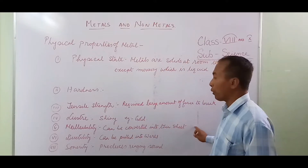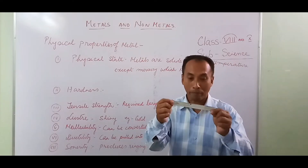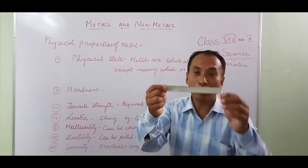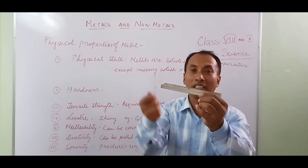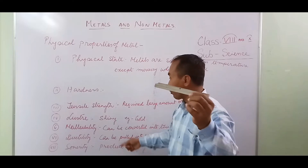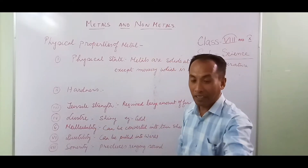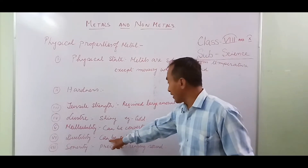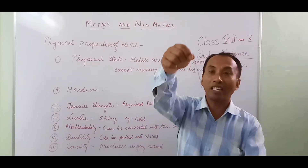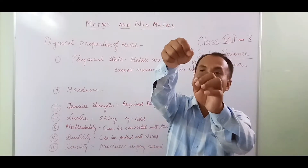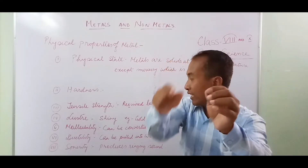The fifth property is malleability — malleability means a metal can be converted into thin sheets when beaten or hammered. This aluminum sheet has been converted into a thin sheet by hammering. The property of a metal that allows it to be pulled into wires is called ductility — this wire here is an example of ductility.